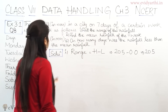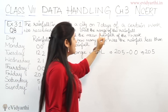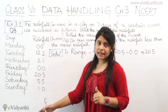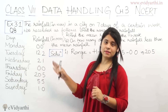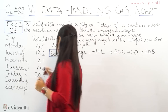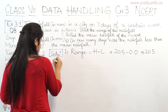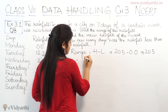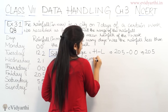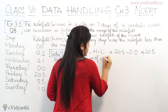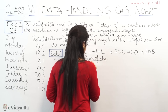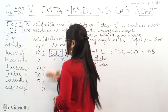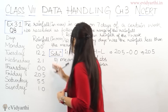Coming to the next part: find the mean rainfall of the week. We have mean rainfall for the whole week, so we need to find the mean of these numbers. The formula for mean is: sum of observations upon number of observations. Observations means the data values given to us.